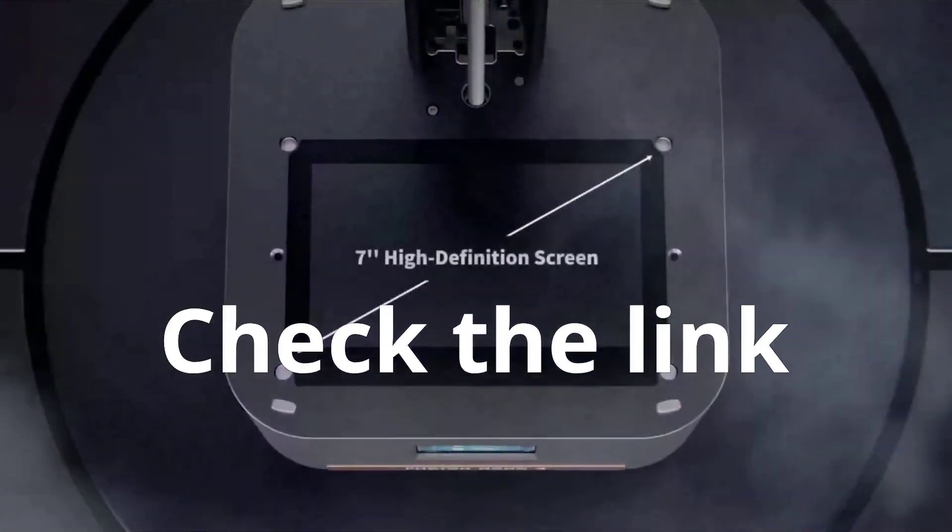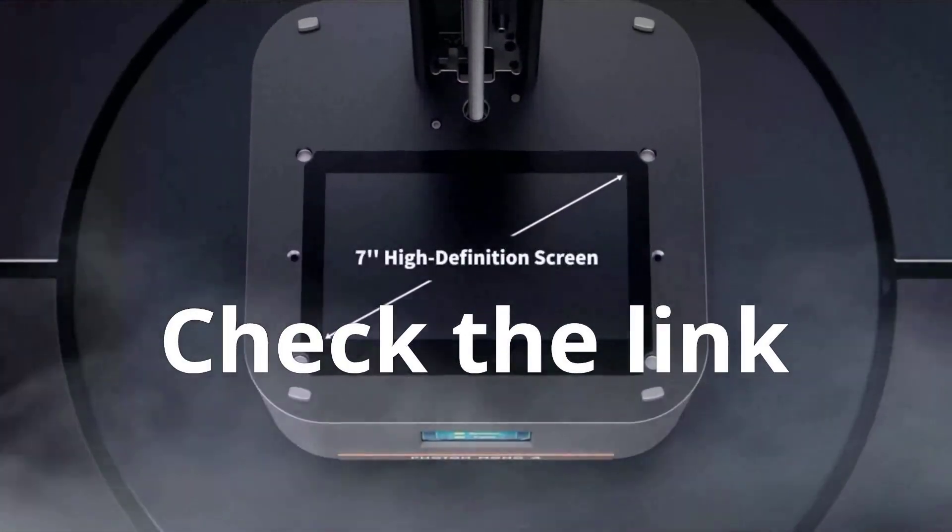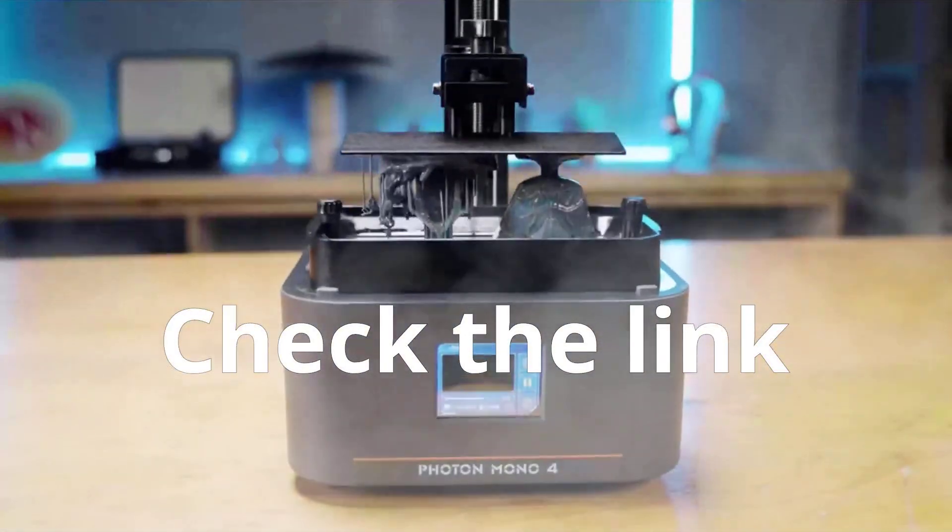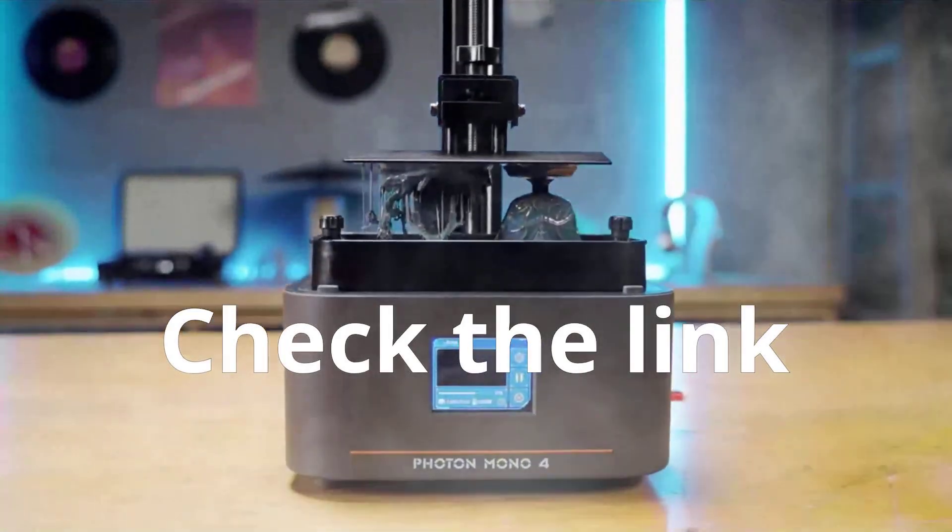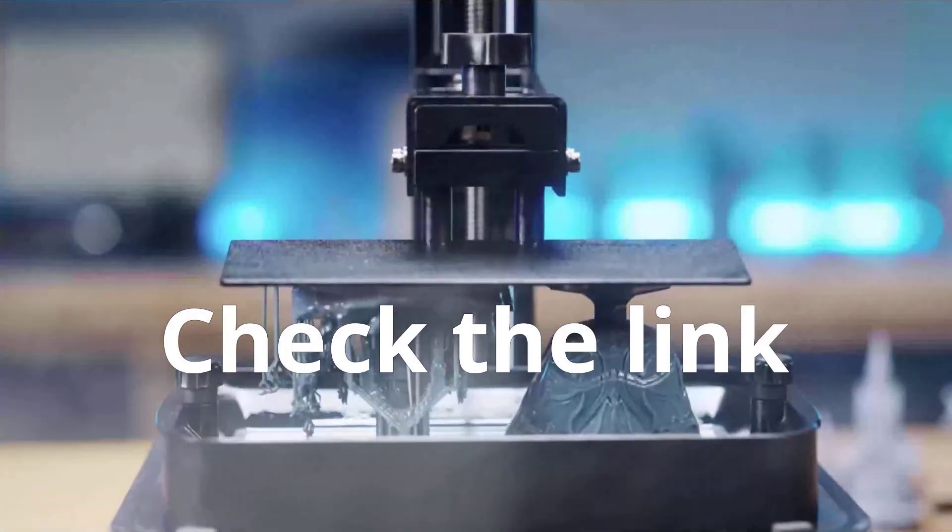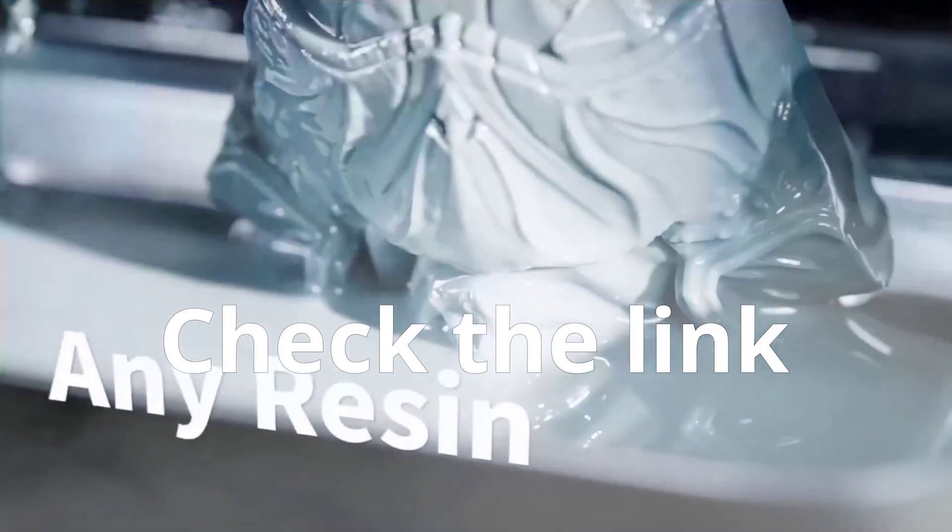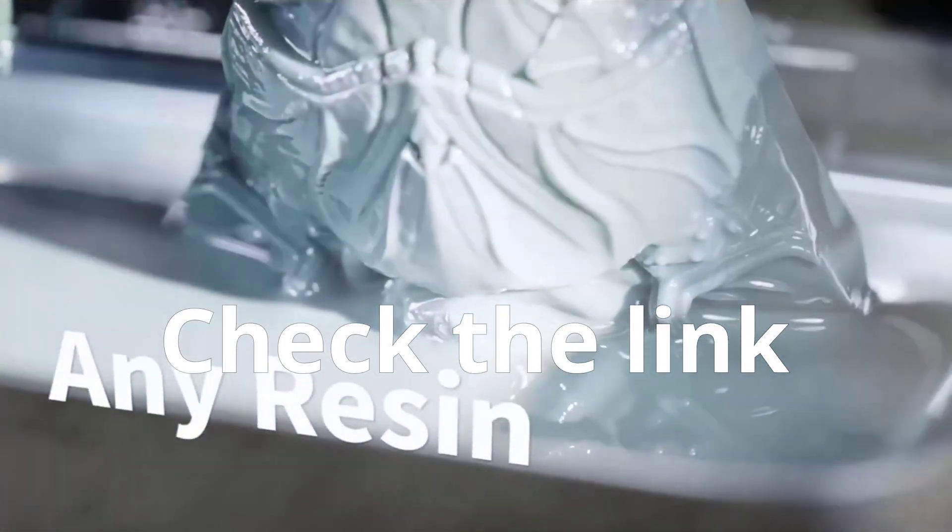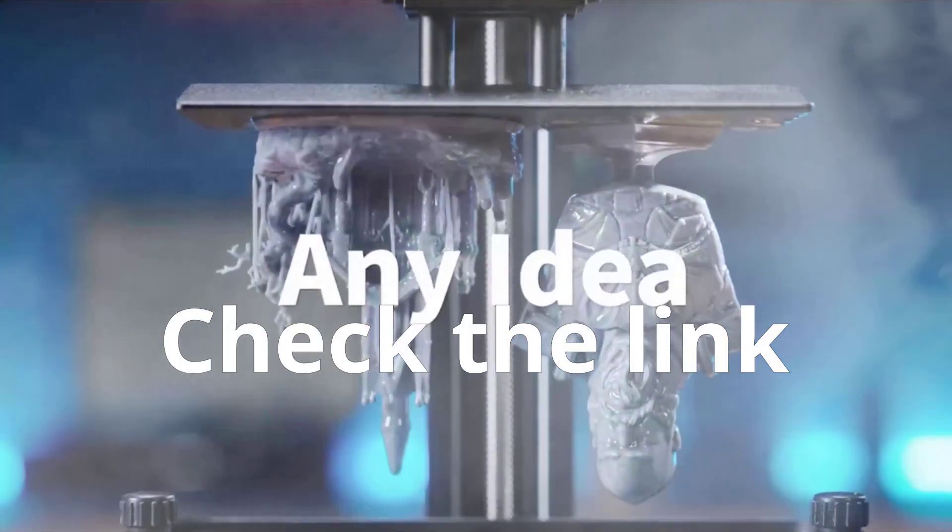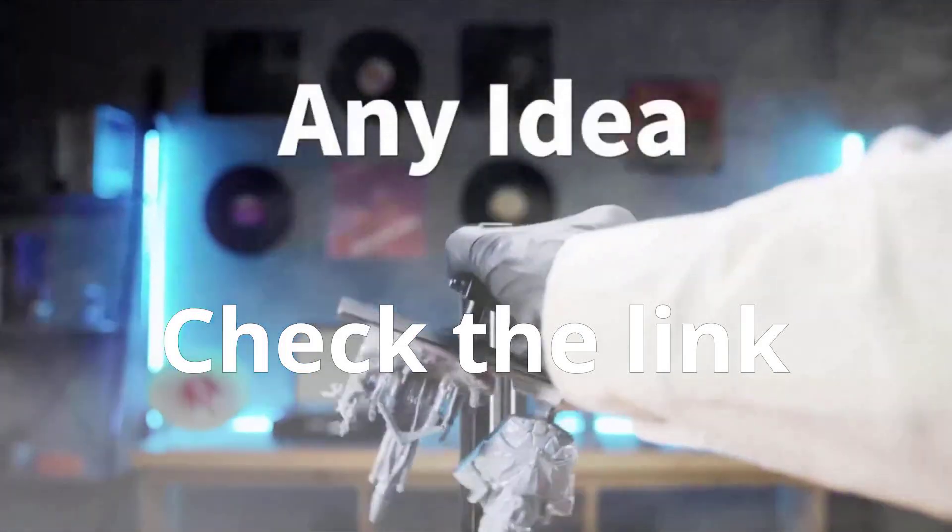To sum up, the Anycubic Photon Mono 4 delivers ultra-high 10K resolution, smooth print quality, generous build volume, and beginner-friendly features, all at a very competitive price. It's a machine designed to make resin printing easier, faster, and more reliable, whether you're a hobbyist or just starting out.